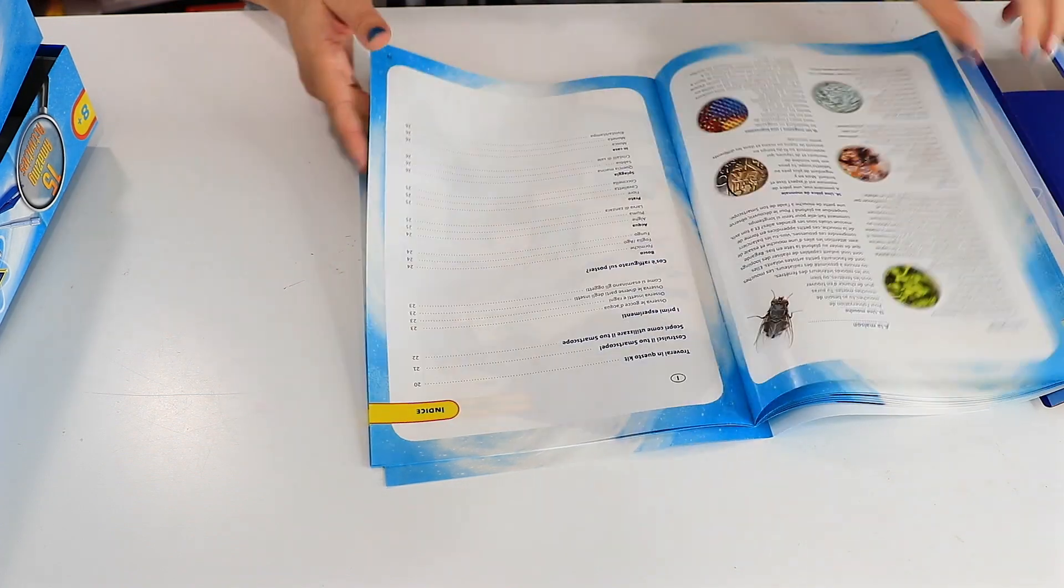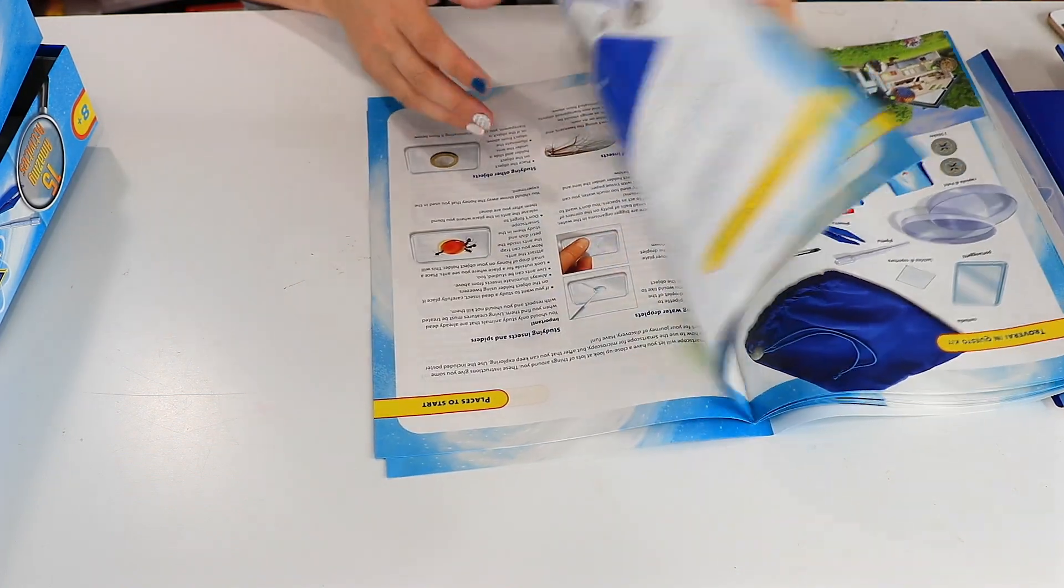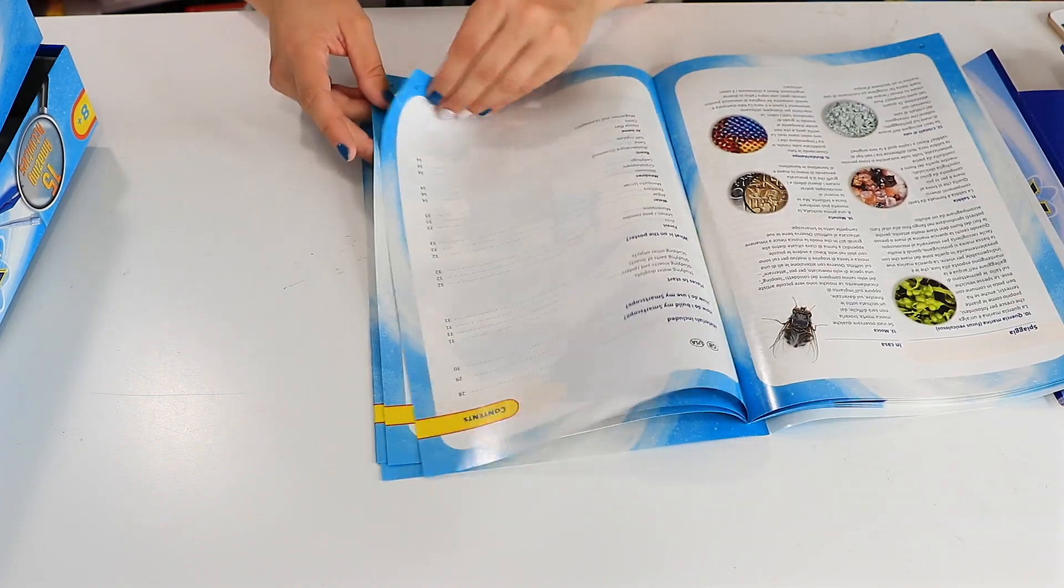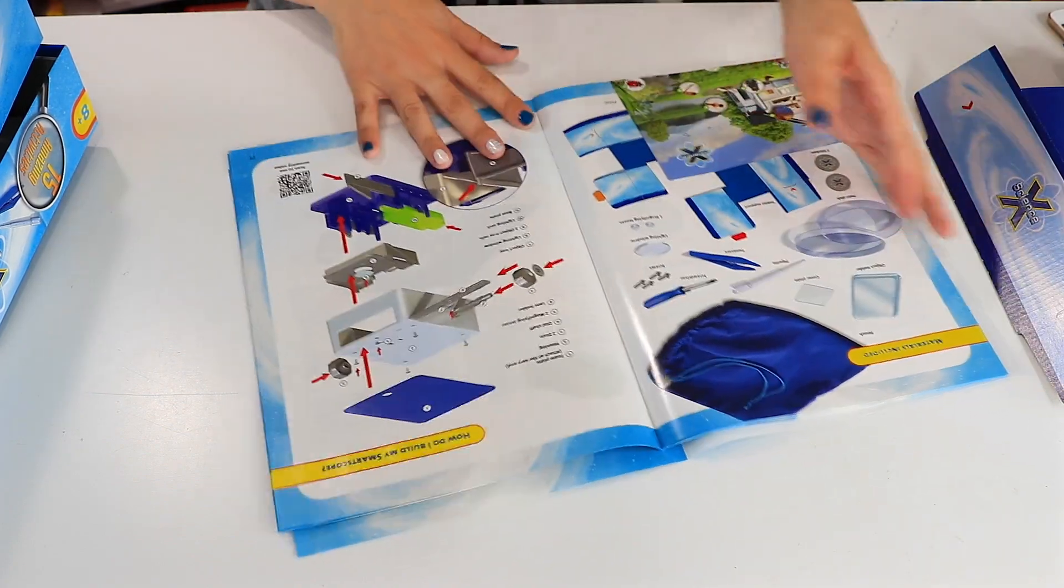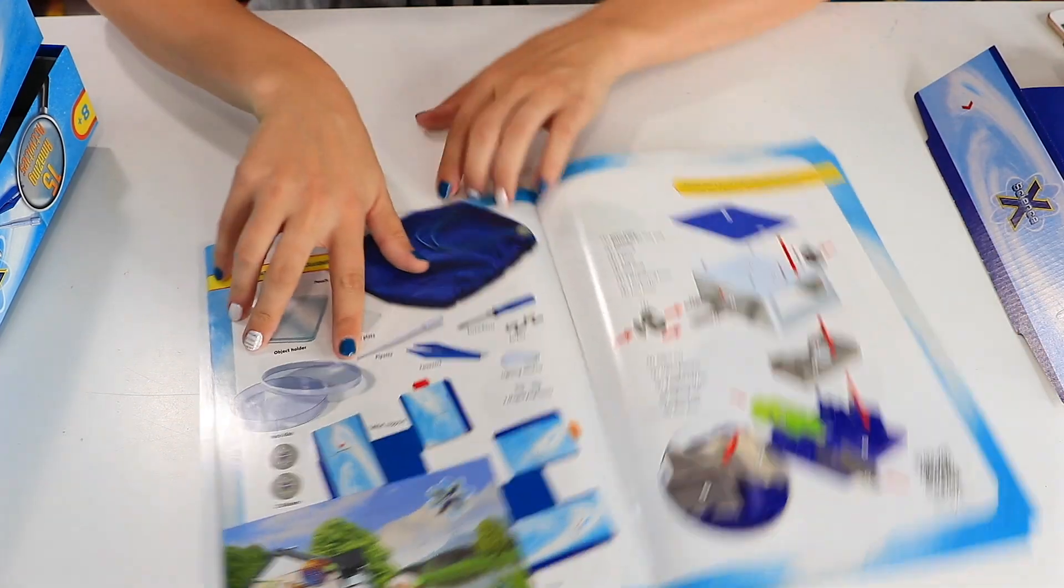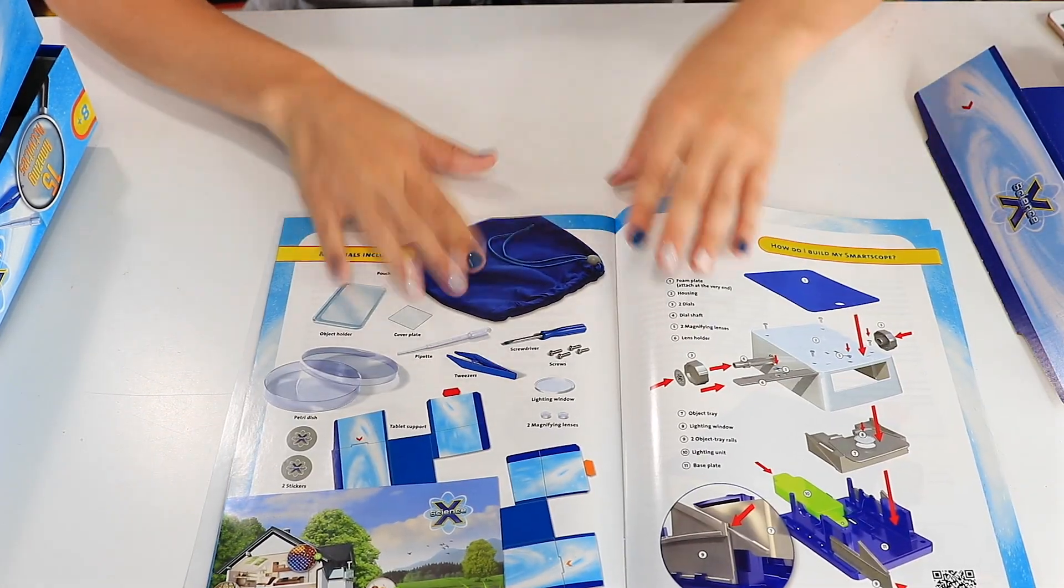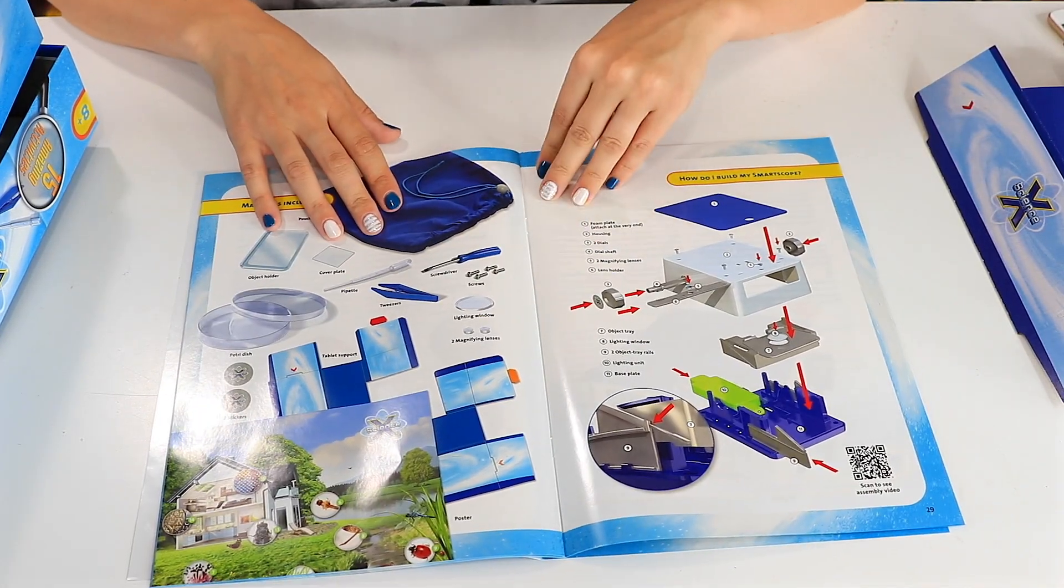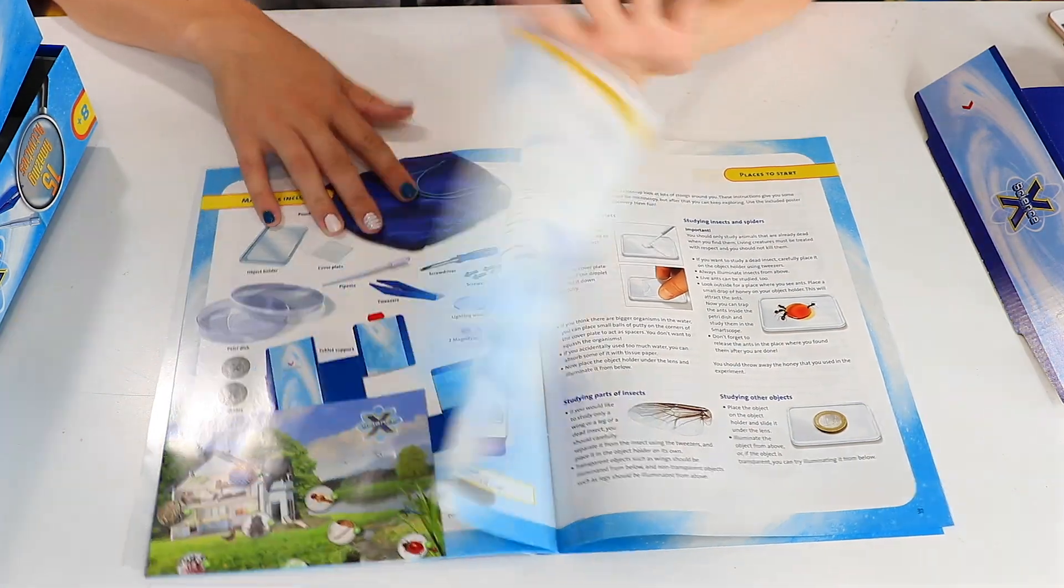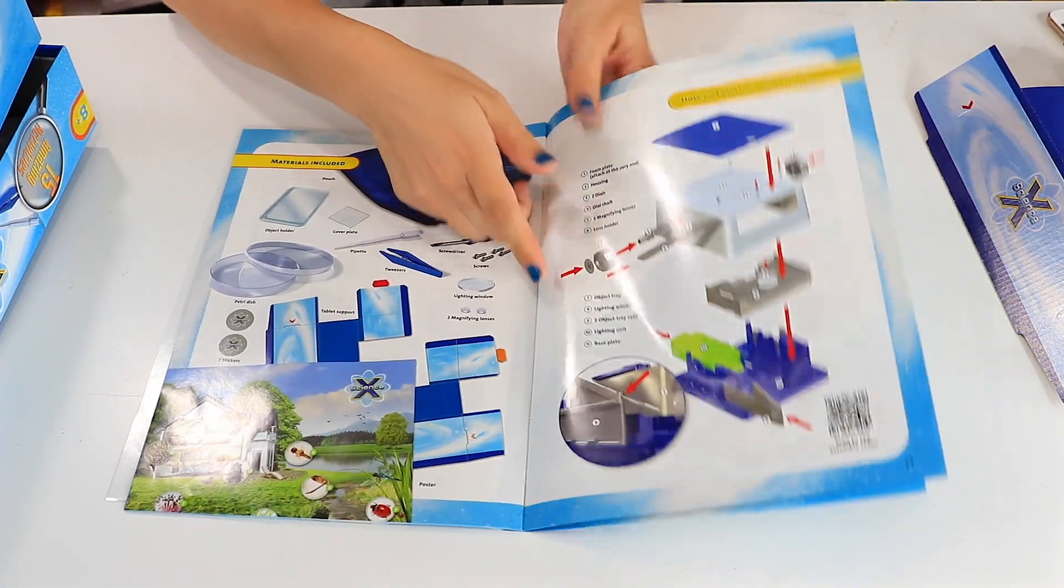There's a big Science X poster on where you can find different things to look at in your microscope. And then of course the microscope to put together. So we've got lots of little pieces here, including one that's got some batteries in it. Alright, so we're going to set this off to the side and pull out our instructions.